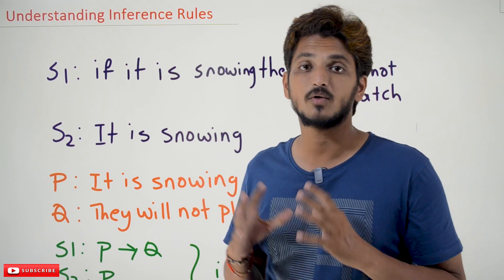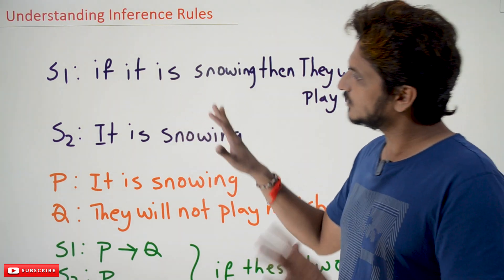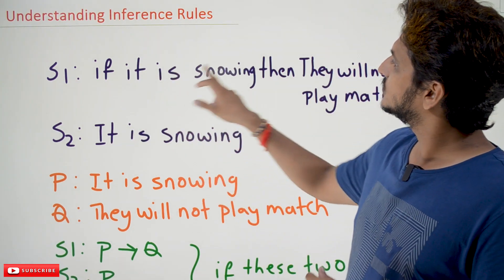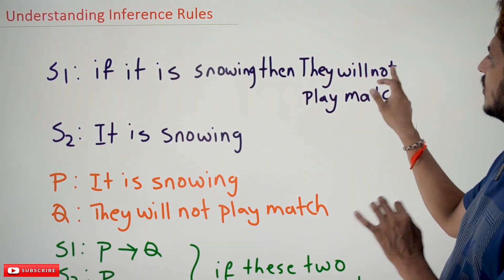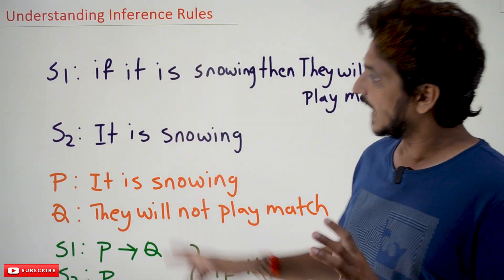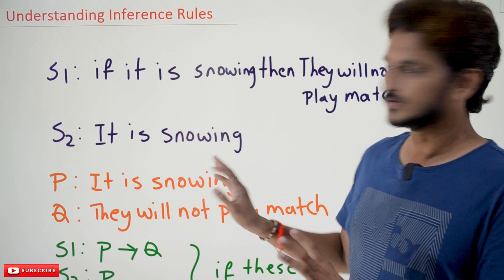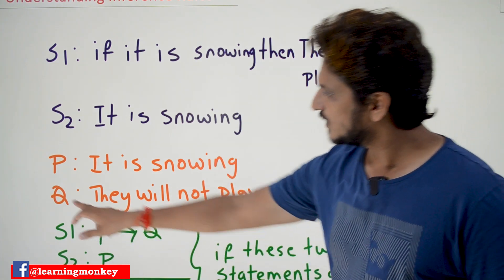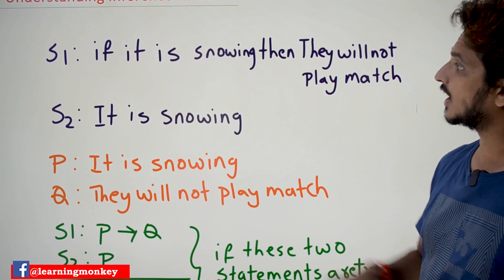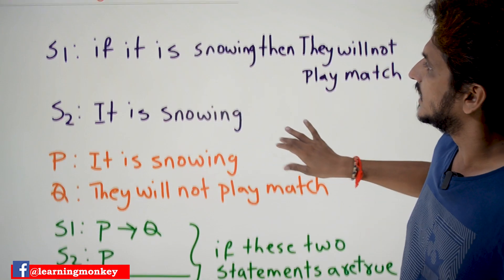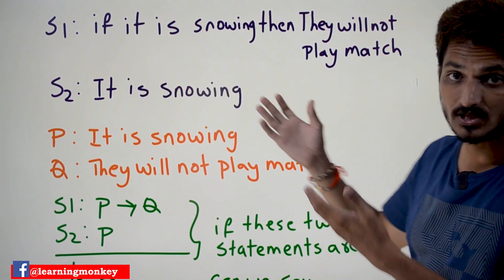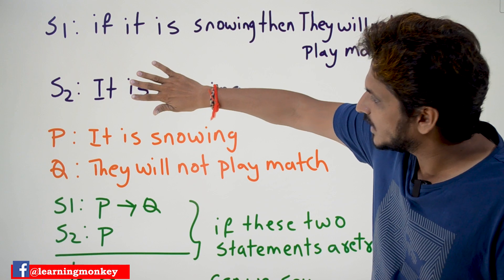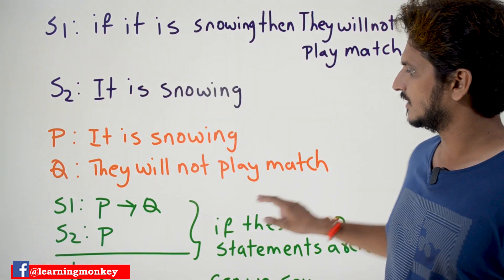The link for the playlist is provided in the description below. Coming to today's class, let's try to understand with an example. Take two statements: statement S1 says 'if it is snowing, then they will not play match,' and statement S2 says 'it is snowing.' P is the atomic statement 'it is snowing' and Q is the atomic statement 'they will not play match.' So S1 can be written as P implies Q, and S2 can be written as P.